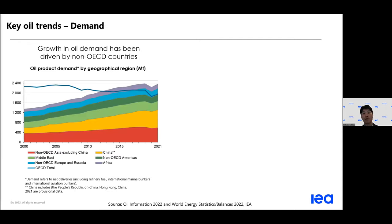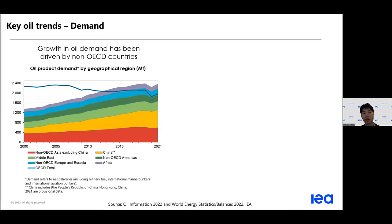When it comes to oil demand, after several years of growth driven by non-OECD countries, our provisional 2021 data shows world oil demand bounced back by around 6% after contracting by 9% due to recurrent lockdowns, widespread teleworking, and international travel restrictions — all impacted by the COVID-19 crisis.